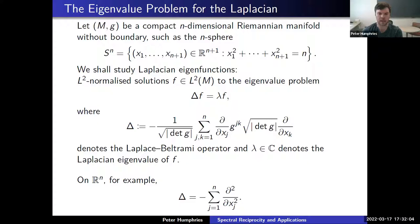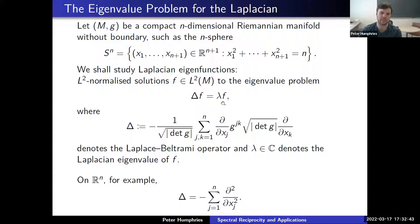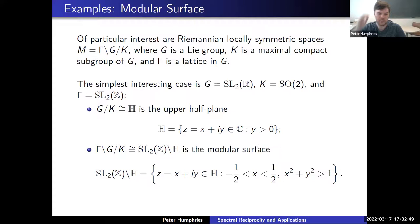I'll begin with a bit of analysis — a priori nothing to do with number theory. The setup is: take some compact n-dimensional manifold M; you can think of something like the n-sphere. You look at the Laplacian eigenfunctions on this manifold. You have the Laplace-Beltrami operator delta, which depends on the Riemannian metric, acting on square-integrable functions on your manifold, and you ask that when you act by this operator you get back the same function times some eigenvalue. In R^n, it's just the sum of second partial derivatives; we put a minus sign out front because we want the eigenvalue to be non-negative. The case we'll focus on is when M comes from something arithmetic in number theory.